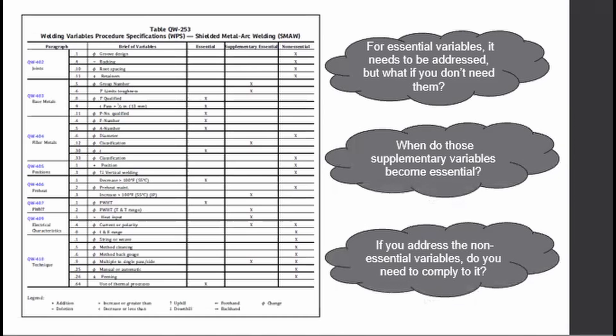If you address the non-essential variables, do you need to comply to them? Yes. For example, if a non-essential variable is specified like the weld technique — if it is specified to be string only or weave only — then the welder must follow it. You do not need to fill up every non-essential variable if it is not applicable to the process, just like shielding gas for SMAW — it's simply not applicable.